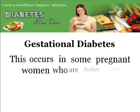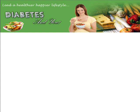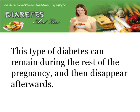Last but not least, let's discuss gestational diabetes. The third form of diabetes is called gestational diabetes. This occurs in some pregnant women who are further along in their term. Symptoms may suddenly appear, or they may not be there at all. This type of diabetes can remain during the rest of the pregnancy, and then disappear afterwards.